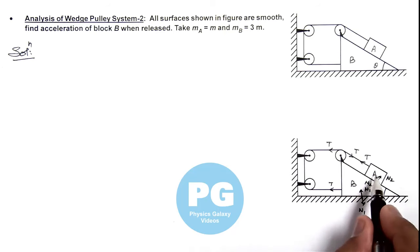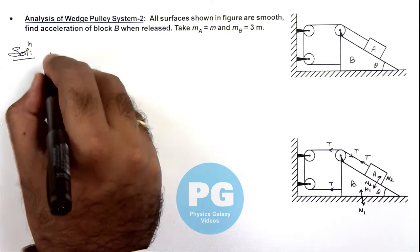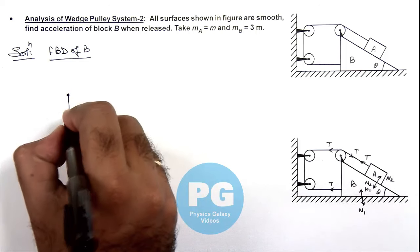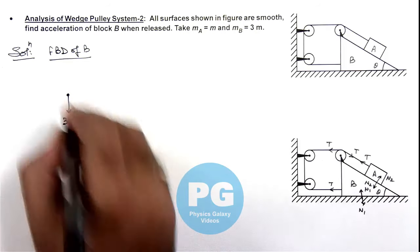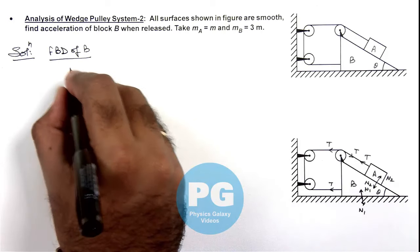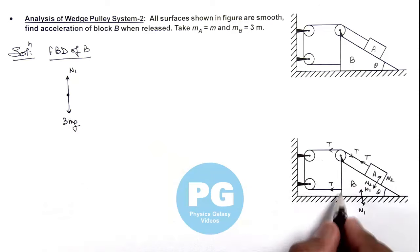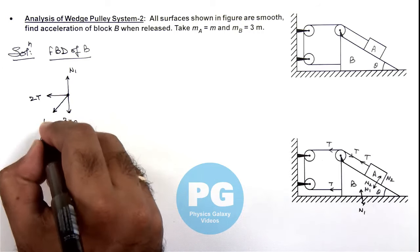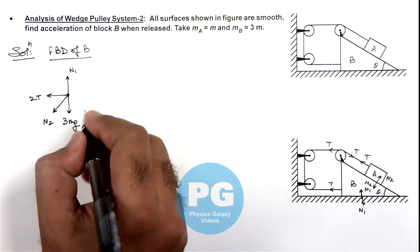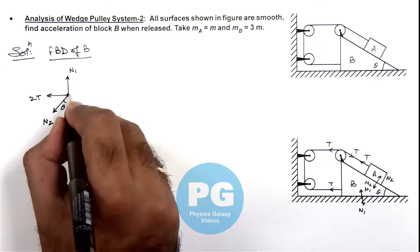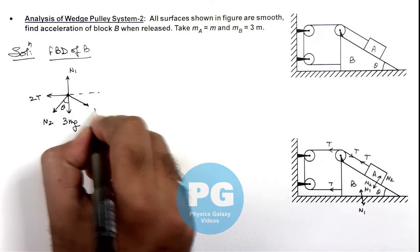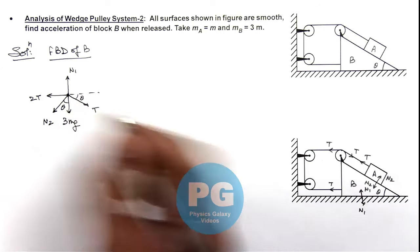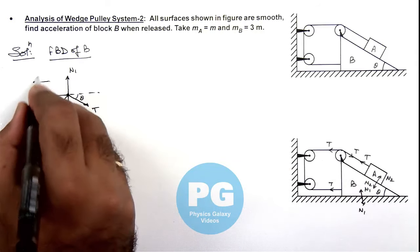We can draw the free body diagrams of A and B and analyze this situation. For block B: it experiences its weight 3mg in the downward direction, normal reaction N1 from the ground in the upward direction, two tensions on the left side, and a normal reaction N2 from block A acting at angle θ with the vertical. One tension acts horizontally due to the pulley attached to block B, also at angle θ. Let us assume block B moves toward the left with acceleration ay.